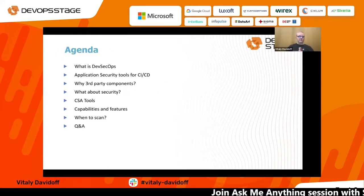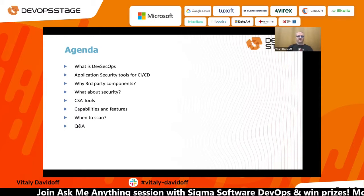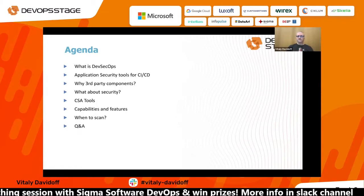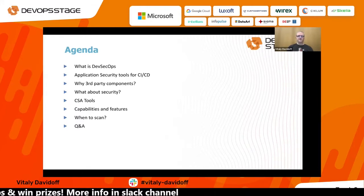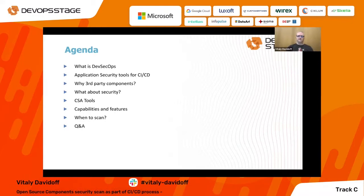What will be our agenda today? We want to do a short recap of DevSecOps and DevOps — the differences and why we need security to be part of our DevOps process. We'll review different security tools we can use as part of our development program, and specifically we will talk about third-party composition analysis tools, review capabilities and features which can help you integrate security and composition analysis more smoothly in your pipelines. We will also cover some best practices and details.